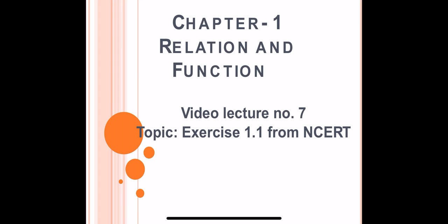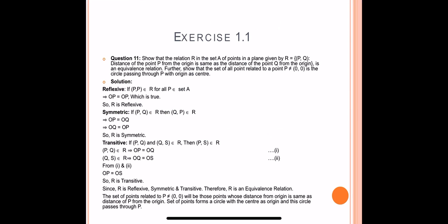Good morning students, welcome to video lecture number 7 on the topic of relations. The question is: show that the relation R in the set A of points in a plane, where set A is all points in the Cartesian plane, is given by R = {(P, Q) : distance of point P from origin is same as the distance of point Q from origin}, i.e., OP = OQ. This relation is an equivalence relation — you have to prove this.